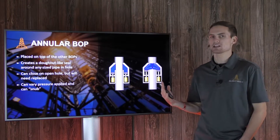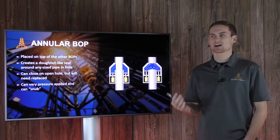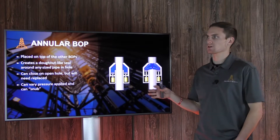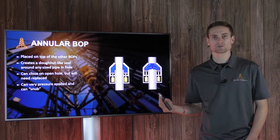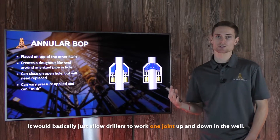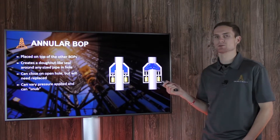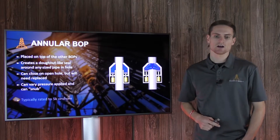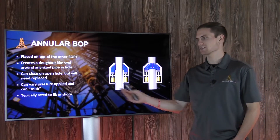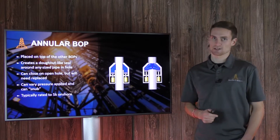You can actually vary the amount of pressure you're applying to create the seal, and this allows drillers to be able to snub. Annular BOPs are not designed for ongoing snubbing operations or to use very often, but they can be used for limited times — though once you snub, you'll probably have to replace them. They are typically rated lower than all of the other ones, and for an onshore application they're usually rated at about 5,000 PSI.